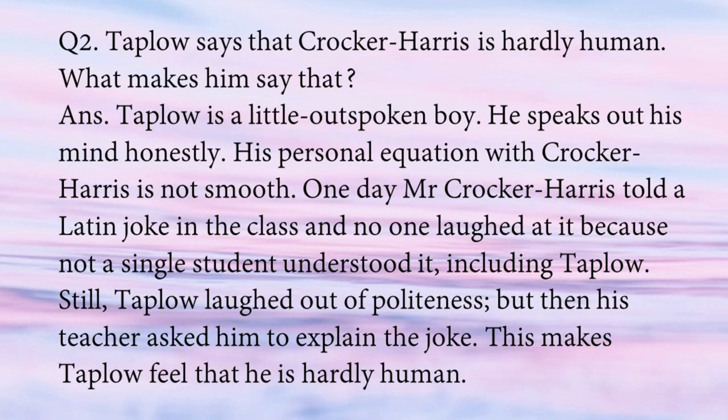Question 2: Taplow says that Crocker Harris is 'hardly human.' What makes him say that? Taplow is a little outspoken boy who speaks his mind honestly. His personal equation with Crocker Harris is not smooth. One day, Mr. Crocker Harris told a Latin joke in class and no one laughed because not a single student understood it, including Taplow. Still, Taplow laughed out of politeness, but his teacher asked him to explain the joke to the whole class — which he could not. This makes Taplow feel that Harris is hardly human.